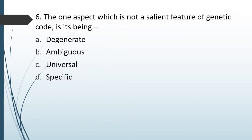Question No. 53: The one aspect which is not a salient feature of genetic code is its being — Degenerate, Ambiguous, Universal, or Specific. The correct answer is Option B, Ambiguous.